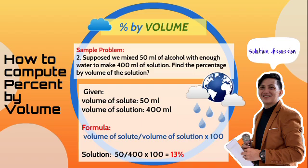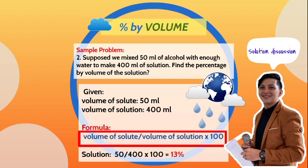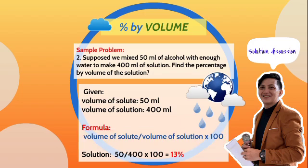Now we have percent by volume. The formula is the same structure as percent by mass. Sample problem number two: Suppose we mix 50 ml of alcohol with enough water to make 400 ml of solution. Find the percentage by volume. Given: volume of solute = 50 ml, volume of solution = 400 ml. Formula: volume of solute divided by volume of solution, times 100. Solution: 50 divided by 400, times 100, equals 13 percent.